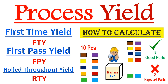Today we are going to understand what is process yield, what is first time yield, and how it is different from first pass yield. We'll also look at rolled throughput yield and understand all three terms with the help of animated examples, so please watch this video till the end.